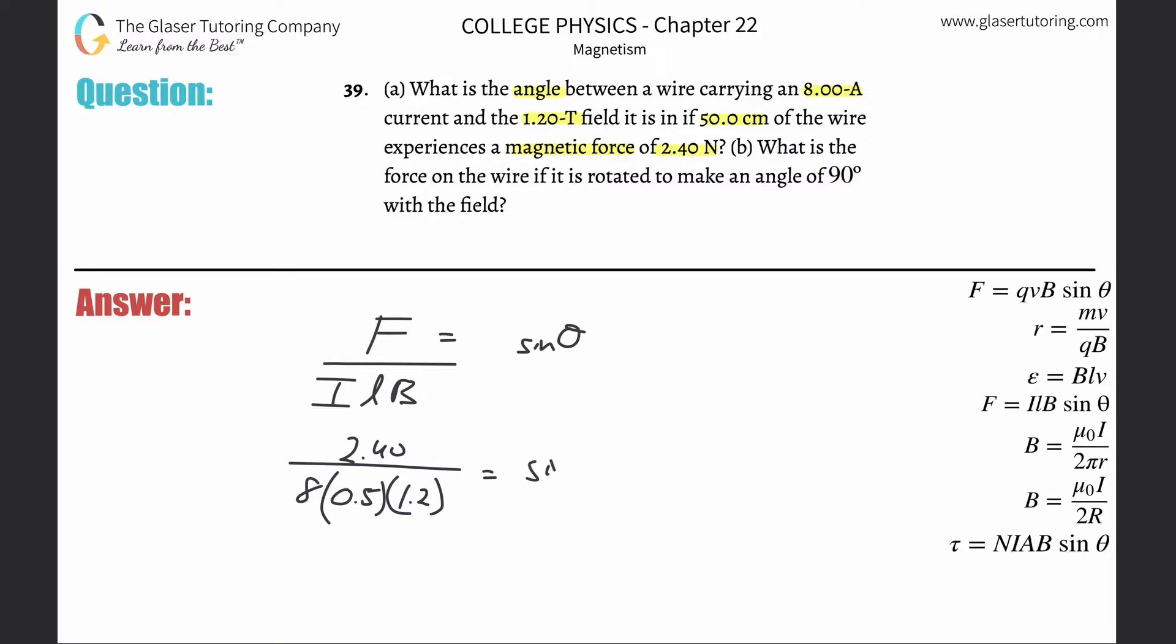This is now relatively straightforward. Be careful, this is not going to be the final answer. So this is 2.4 divided by 8 times 0.5 times 1.2. This works out to be 0.5, and that's now equal to the sine of theta.